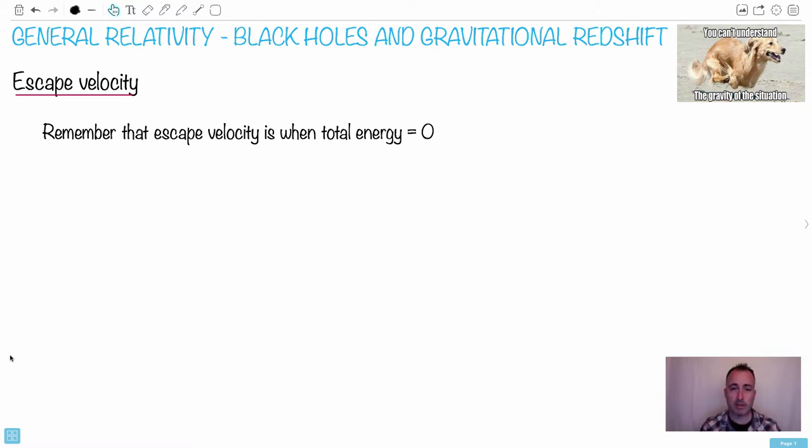I don't know if you remember that from the main course from paper one and two material, but just to remind you, the way we get an escape velocity, that's when the total energy equals zero. Do you remember the equation for total energy? Maybe I'll put it down here. So total energy is just the kinetic plus the potential energy.